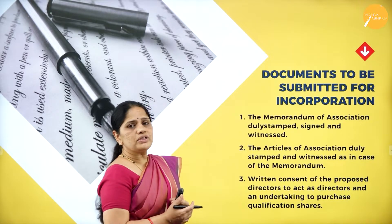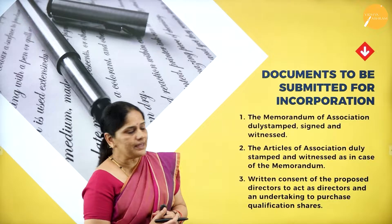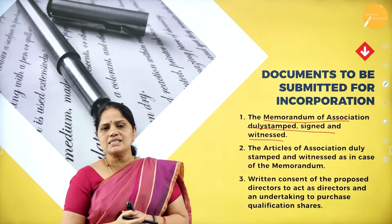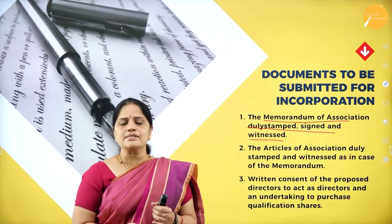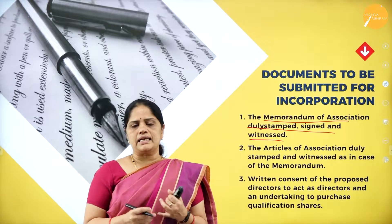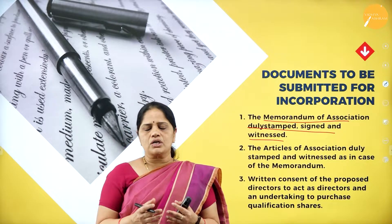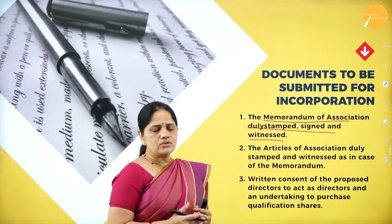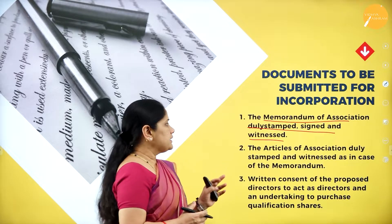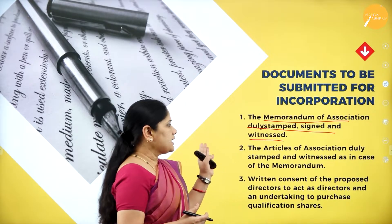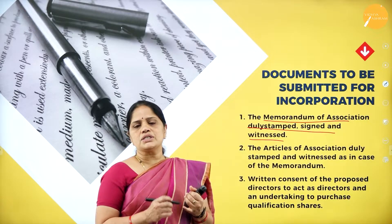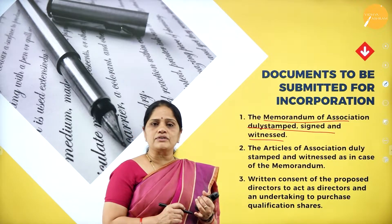Now let us look at the documents required to be submitted for incorporation of a company. The first one is Memorandum of Association, duly stamped, signed and witnessed. The Memorandum of Association has various clauses like the name clause, the capital clause, the situation clause, the object clause, etc. All these clauses should be duly signed by the concerned authorities, properly stamped, signed and witnessed. There should be witnesses for the signature. So Memorandum of Association is one of the most important documents to be submitted for incorporation.